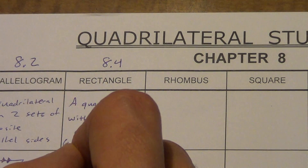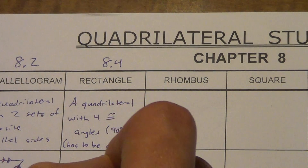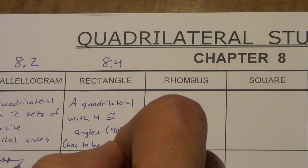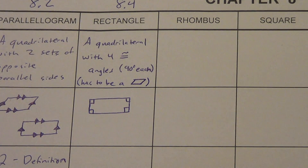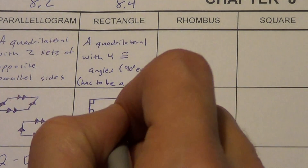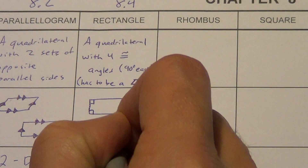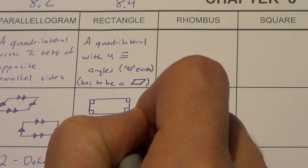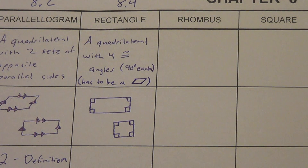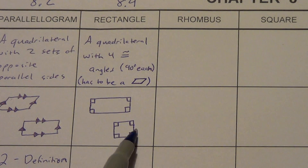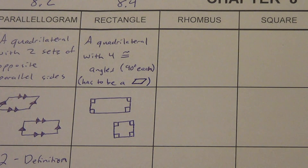Let's draw a couple of examples. First, we'll draw our typical rectangle and put our four right angles in. We could add our parallel sides as well, but this is just the part of the definition. Drawing another rectangle — it kind of looks like a square, and it might be one. A rectangle can be a square; the definition doesn't say anything about the sides. Because it's a parallelogram, the opposite sides are congruent, but all four sides could potentially be congruent — we just don't know for sure. So it could be a square, but it doesn't have to be.